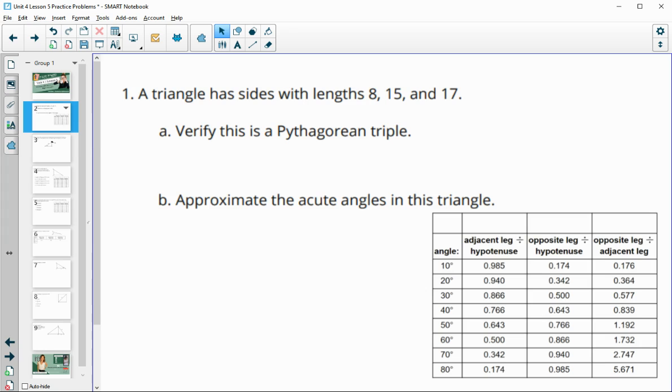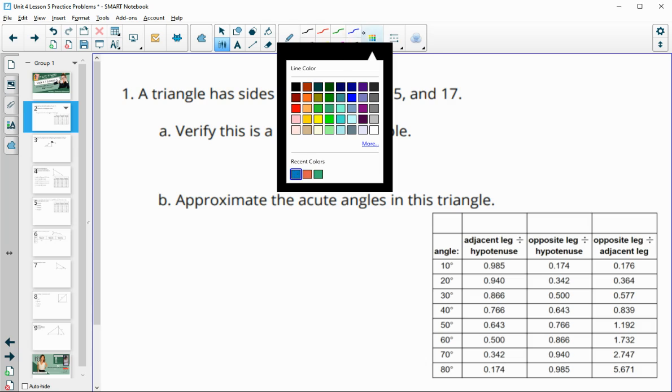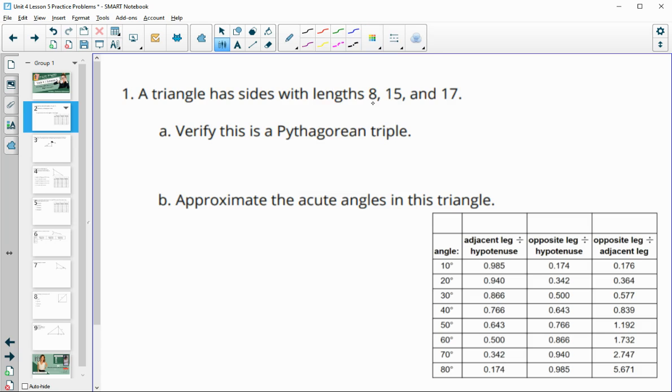Number one tells us that we have a triangle with side lengths of 8, 15, and 17. It first wants us to verify that this is a Pythagorean triple, meaning that the three side lengths are all whole numbers, which they are, so no decimals.